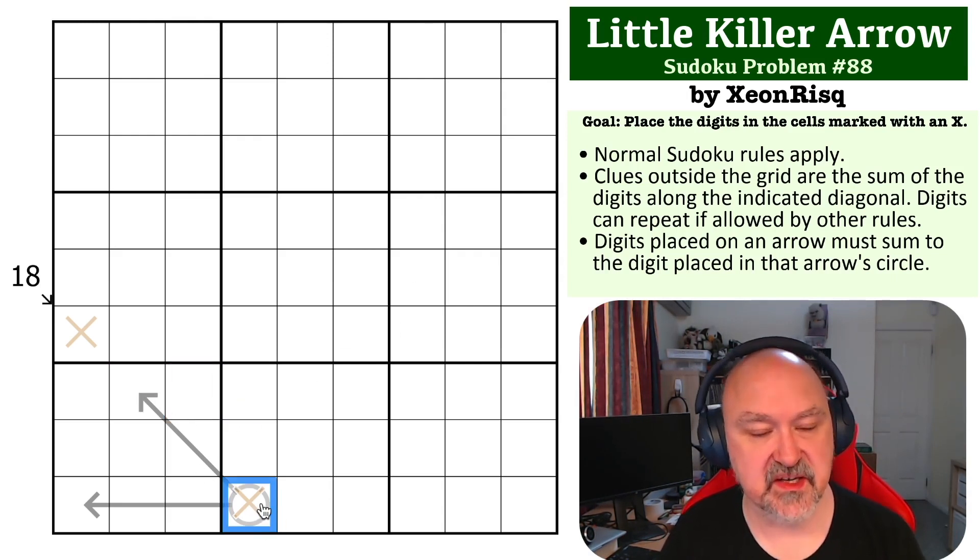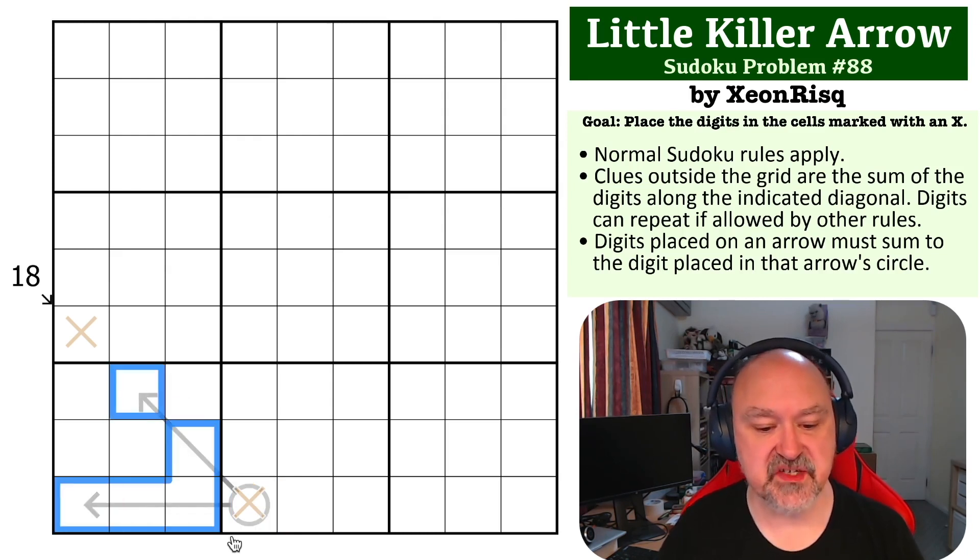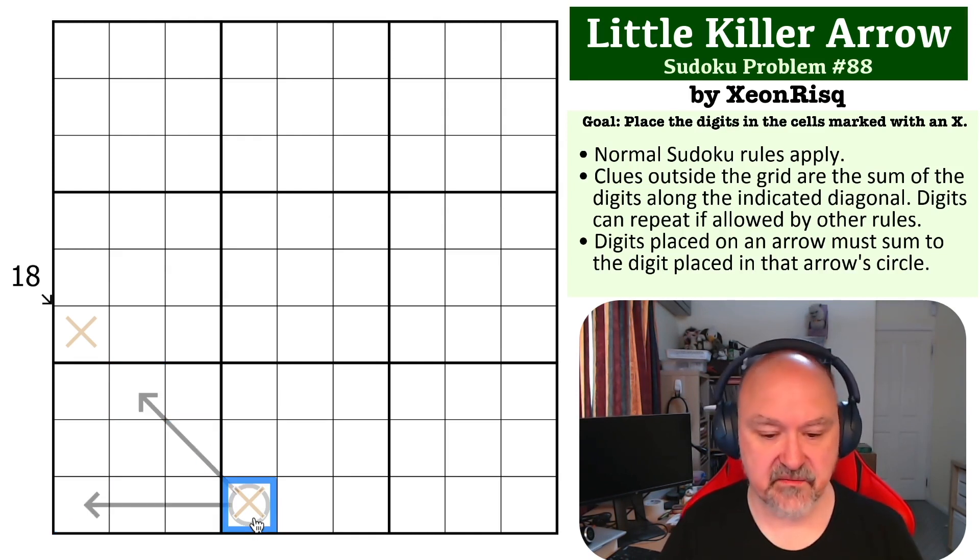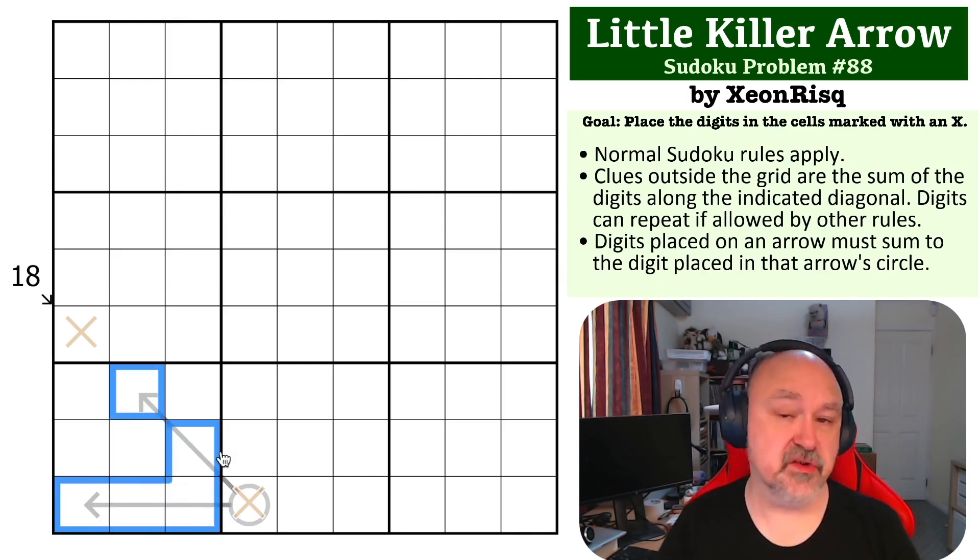The first one is, what are the possibilities that can go into this arrow circle? There are five digits in the same box that have to be added together to make a possible candidate for this. The minimum that you could put into these five would be 1, 2, 3, 4, 5, which would add to 15. So the minimum total of all of those cells is 15, but there's two arrows.